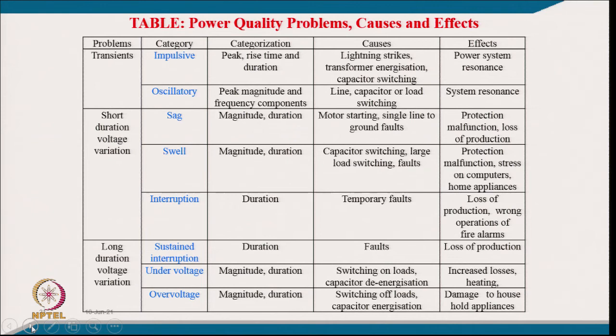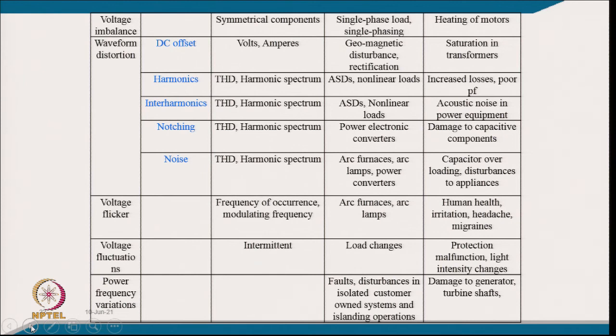Long-duration voltage variations include sustained interruption defined by duration, caused by faults resulting in loss of production. Under-voltage is quantified by magnitude and duration, caused by switching of load and capacitor de-energization, increasing losses and heating. Over-voltage is caused by switching of load and capacitor energization and damages household appliances.